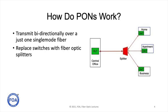The secret to passive optical networks is the fact that they transmit bidirectionally over just one single mode fiber, and they replace traditional electronic switches with fiber optic splitters.